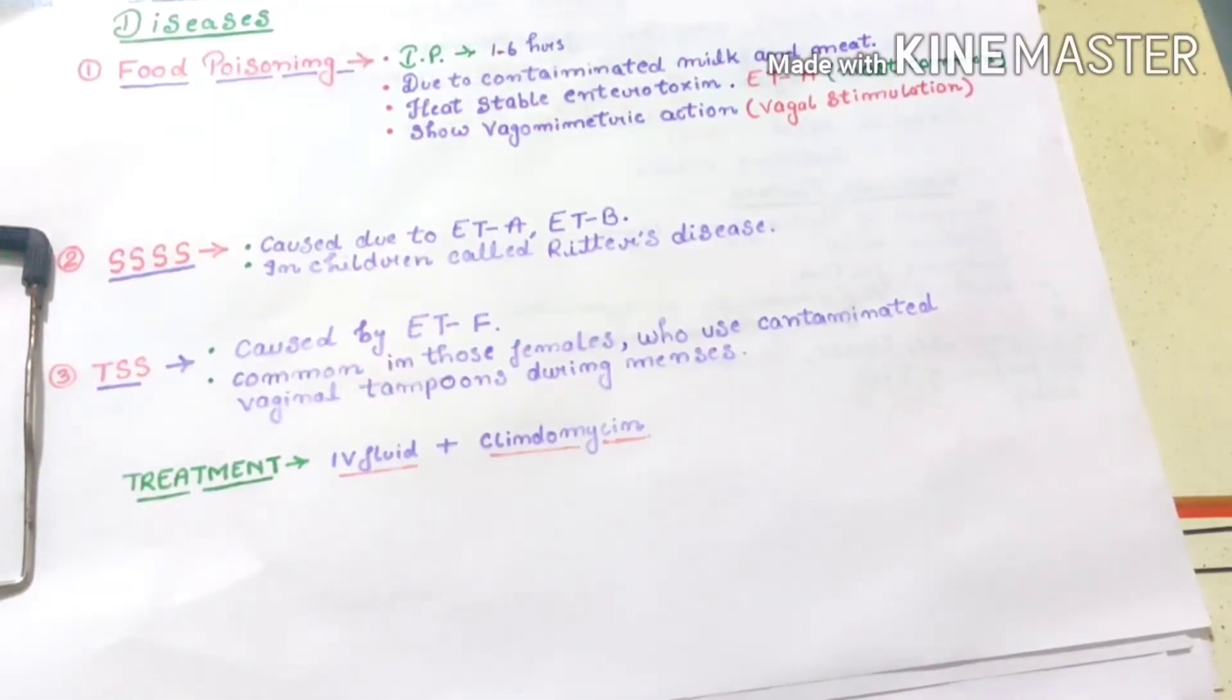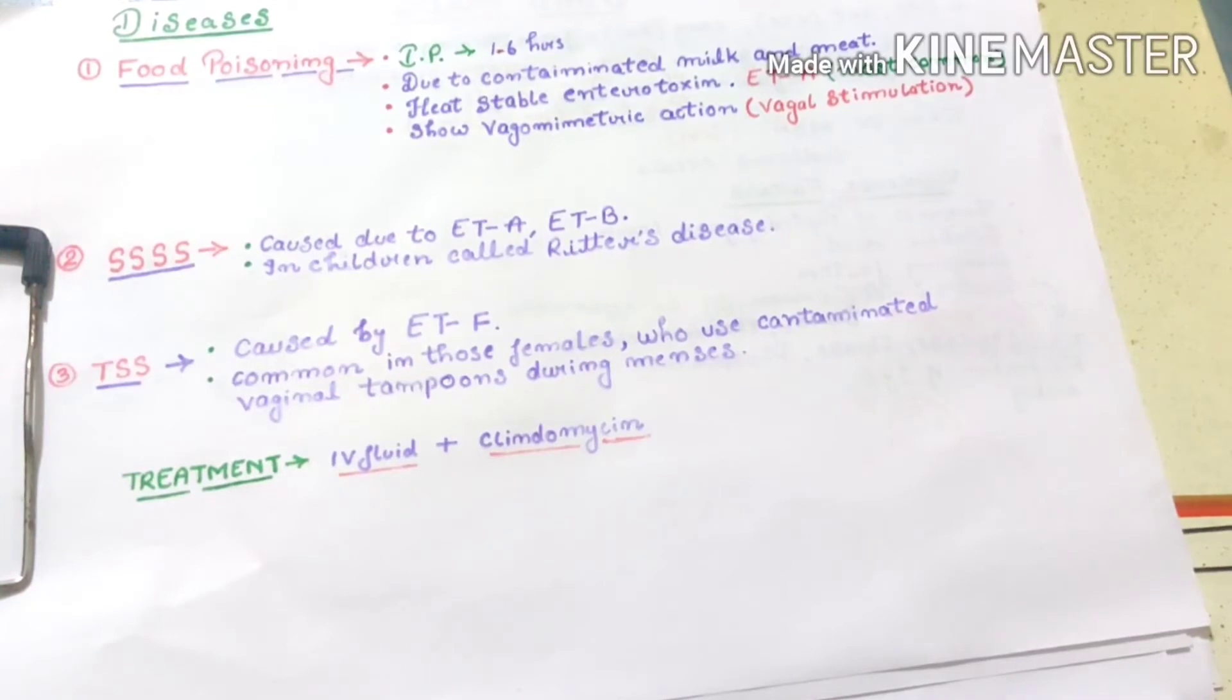Now the next point is disease. Which diseases does it specifically cause? Important one is food poisoning. Food poisoning incubation period is 1-6 hours, due to contaminated milk and meat products.